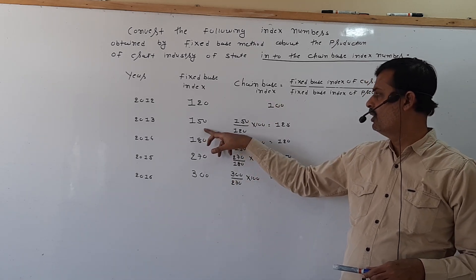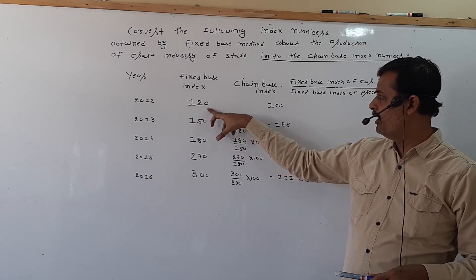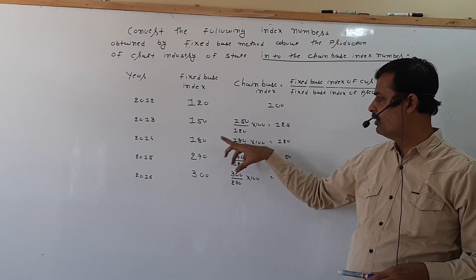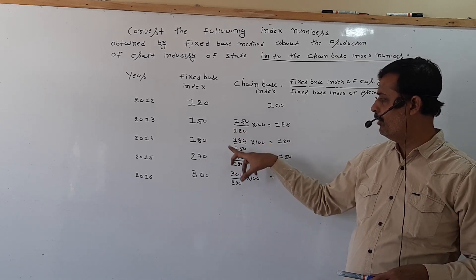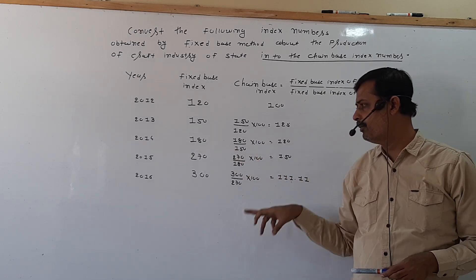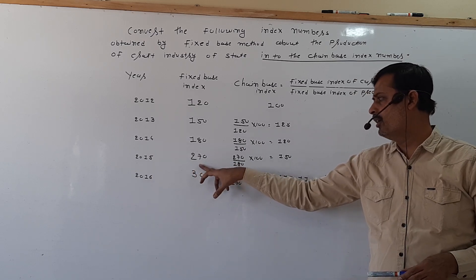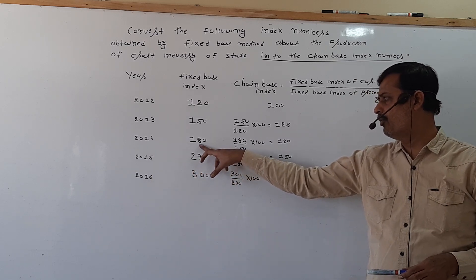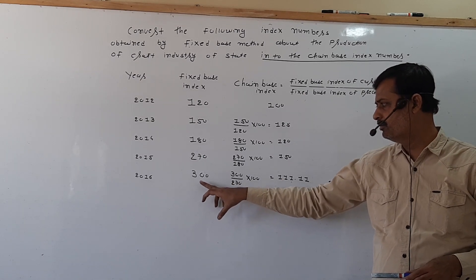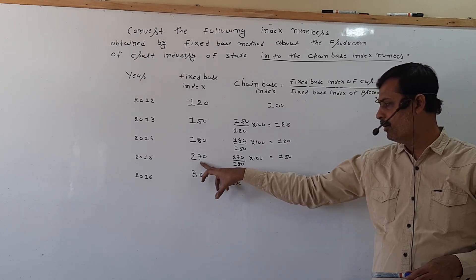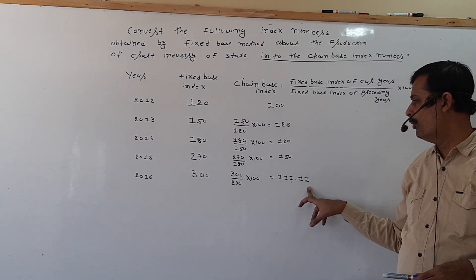In 2013, current year fixed base is 150, preceding year index is 120, into 100 — that is 125. In 2014, current year 180, preceding 150, into 100 — that is 120. In 2015, current year index 270, preceding 180, into 100 — that is 150. In 2016, current year index 300, preceding 270, into 100 — that is 111.11.